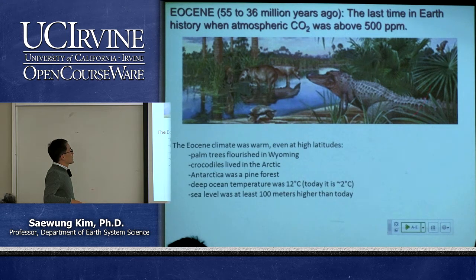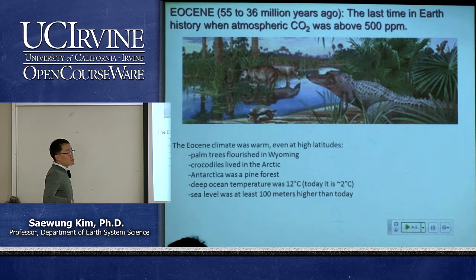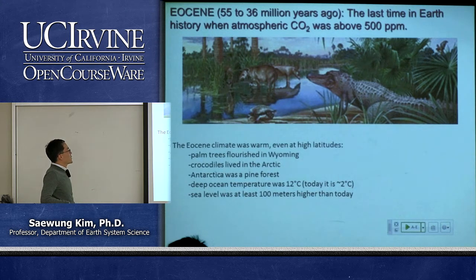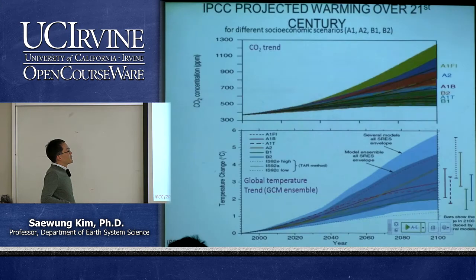Right now CO2 concentration is 400 ppm. The model indicates that business as usual could push CO2 above 1,000 ppm. When CO2 was above 500 ppm naturally — about 50 million years ago — fossil records show palm trees in Wyoming, no ice over the Arctic or Antarctic, crocodiles living in the Arctic, and Antarctic was a pine forest. Basically, it's a very scary experiment to see what happens in the next 100 years if we keep emitting CO2 as usual.